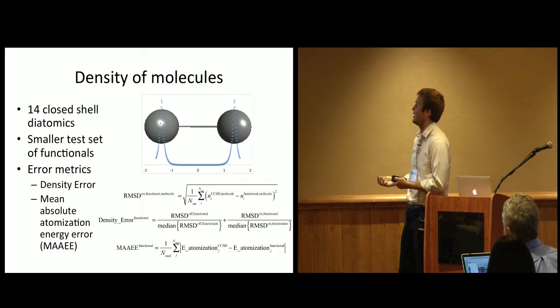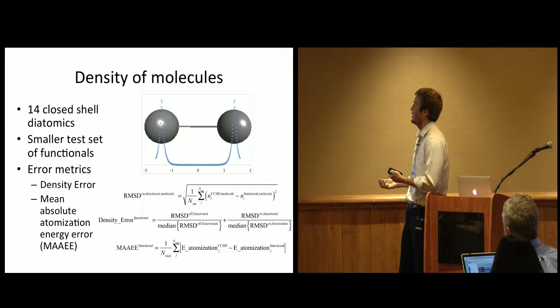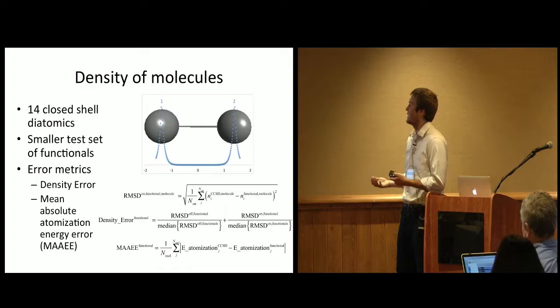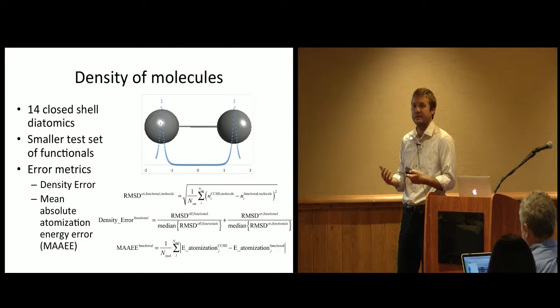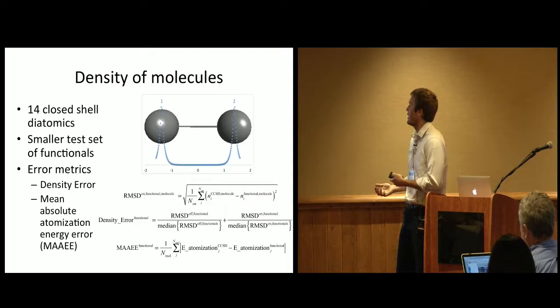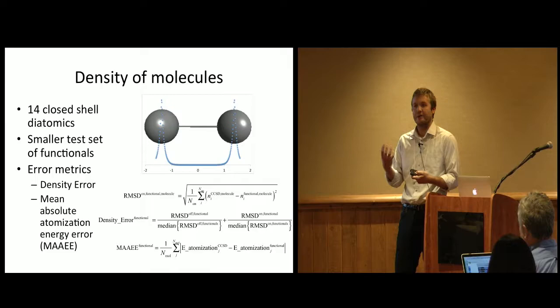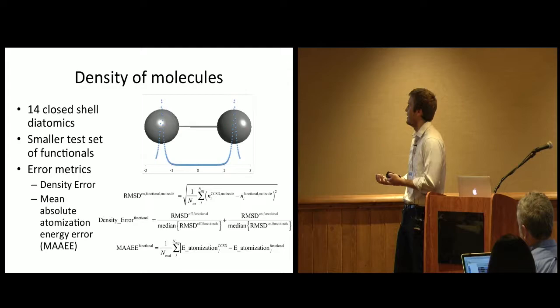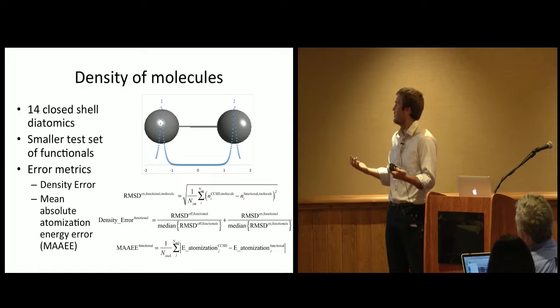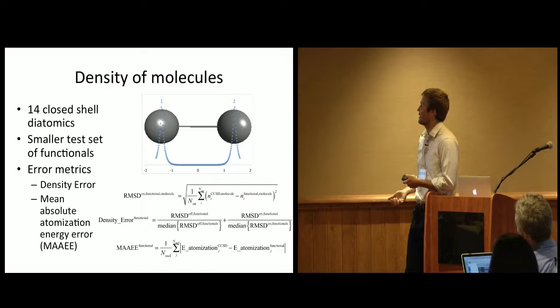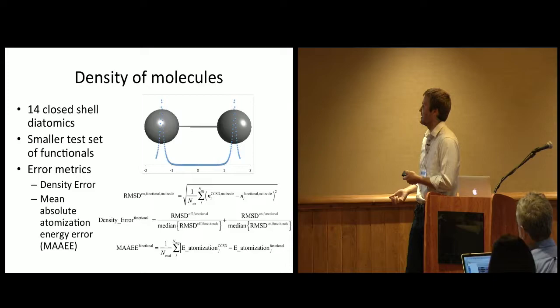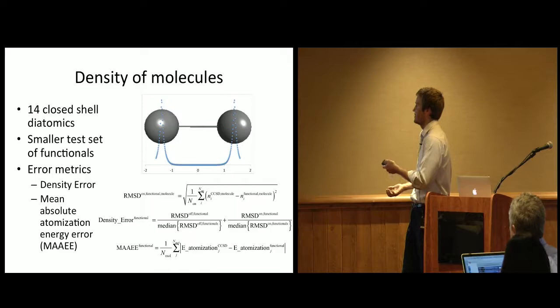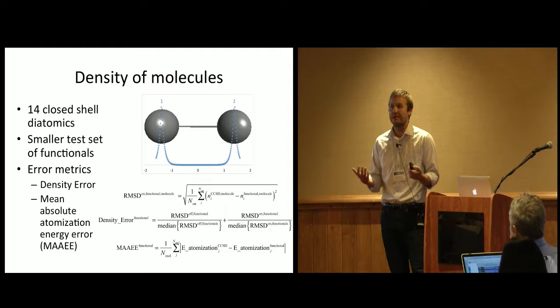For our error metrics, for the density error, I have a lithium dimer shown, and I have the density plotted just on this line right here. So this is a 1D slice of the density. We have something called the on-axis density. For the on-axis density, what I'm going to do is compute the root mean squared density for each functional relative to coupled cluster, which is a highly accurate benchmarking method, and I'm going to select the 15% of points that are lowest. So we're going to define that as our bonding region so we can avoid the density in these core regions that I really don't care about. In this case, since this molecule is symmetric, it's going to be just the points in this region right here. I can compute the root mean squared difference for the densities relative to coupled cluster.